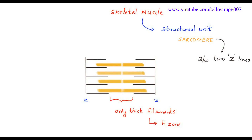The H zone is the comparatively lighter portion of the A band. The center portion of the H zone has a line called the M line. The structural protein that connects the Z line to actin is called actinin, and the structural protein that connects the Z line to M line is called titin.